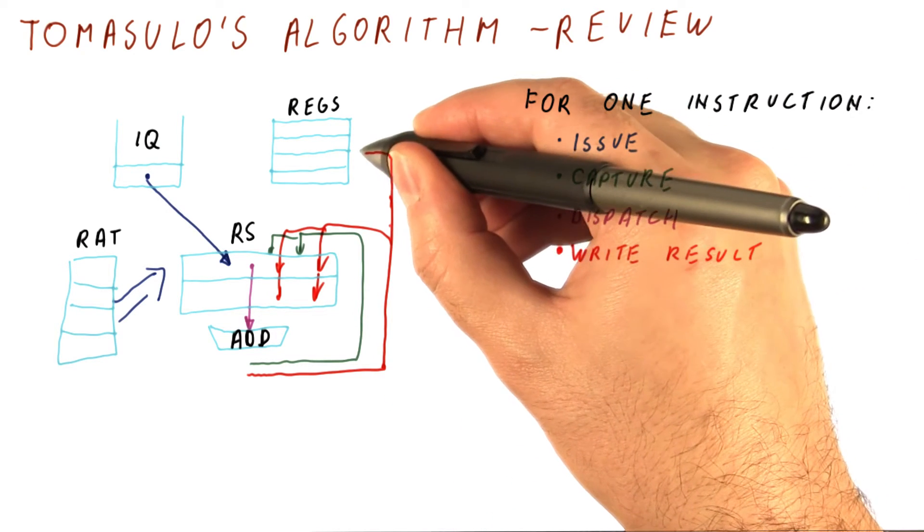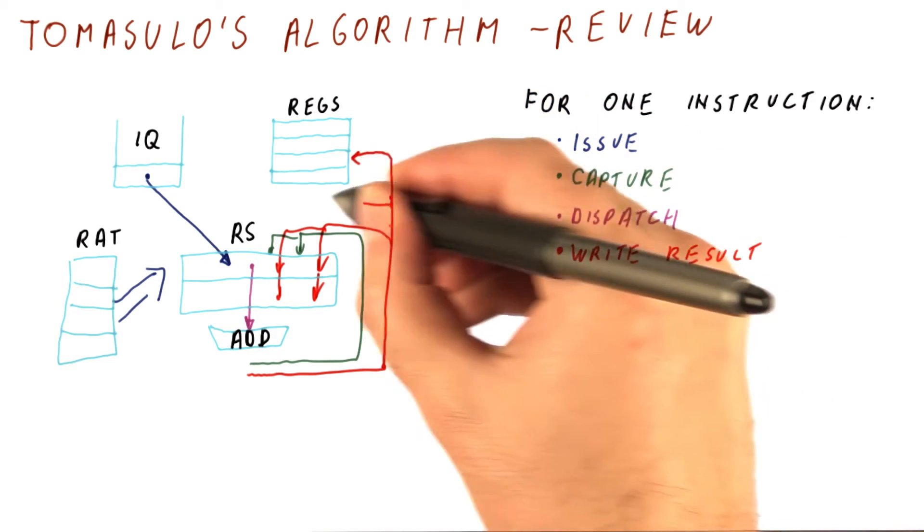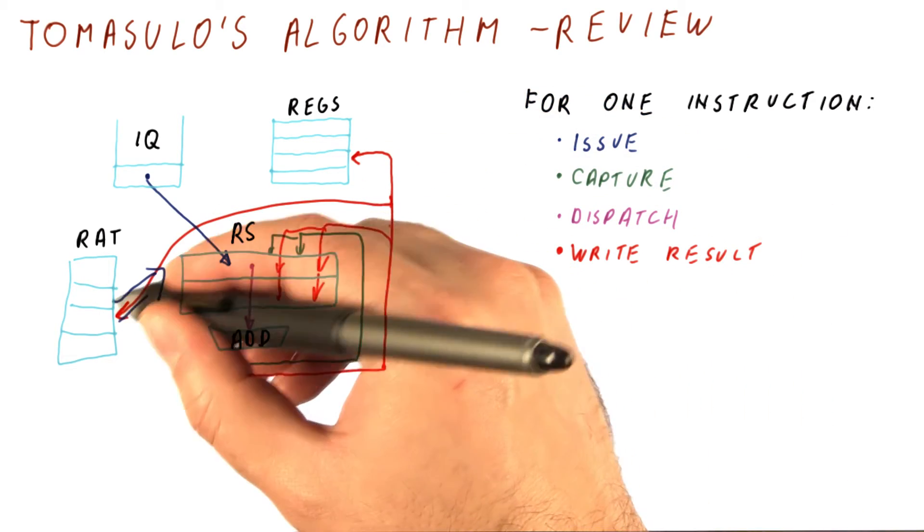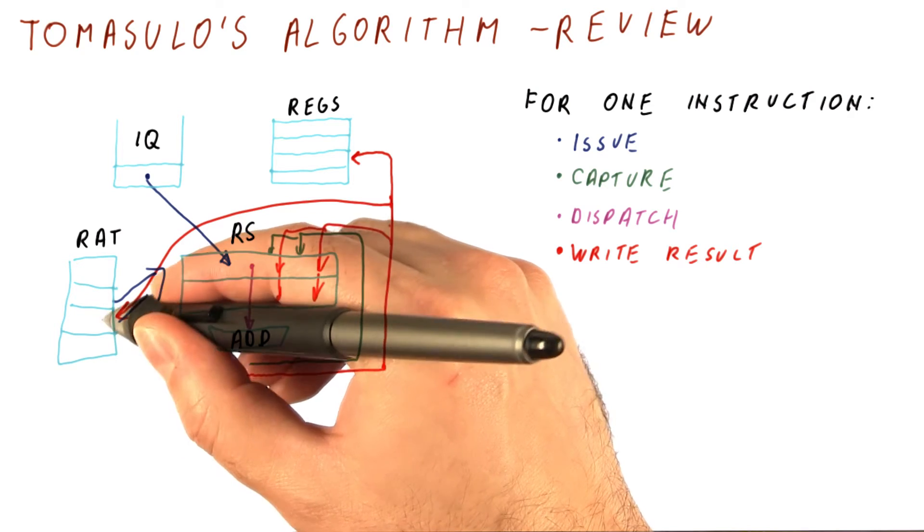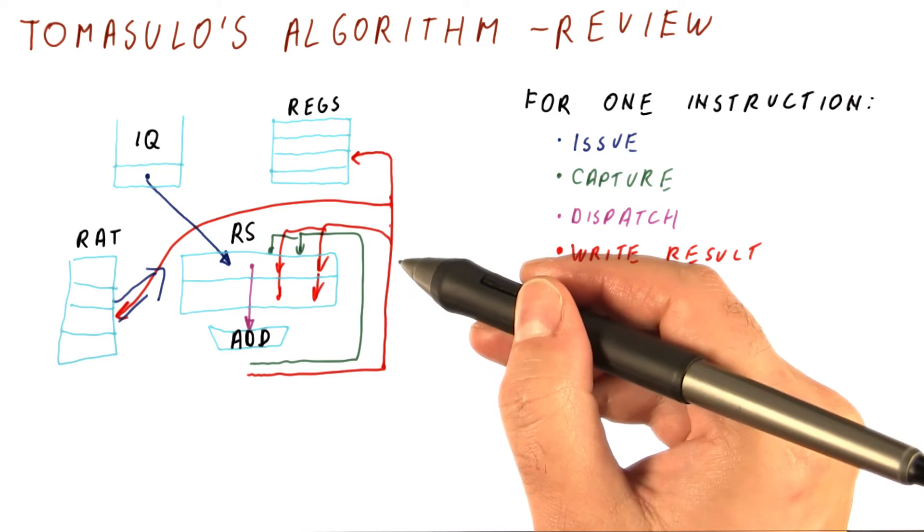This instruction also writes to the register that it is supposed to update, and it updates the RAT for that register so that future instructions start reading the register file and not waiting for this instruction anymore.